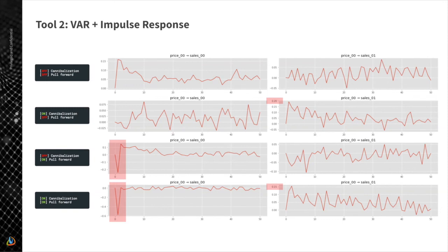For cannibalization, we can obtain the same insight by measuring the impulse response function between the price of one product and the sales data for another. If we do not have a cannibalization factor in the data generator, this dependency is essentially negligible with very low magnitude — just noise. But if we really have cannibalization, we have a much higher magnitude and can see how the price of one product influences sales of another, including the dynamics of how long-lasting this effect is.